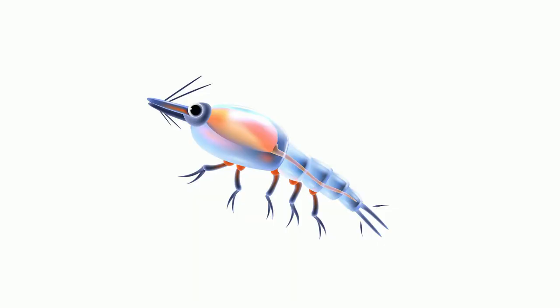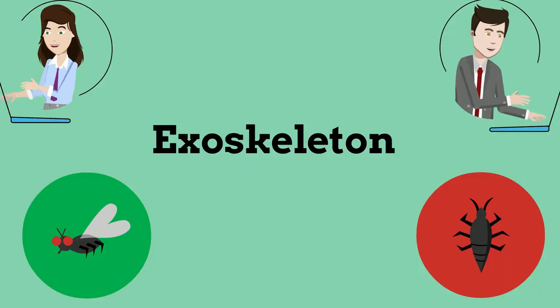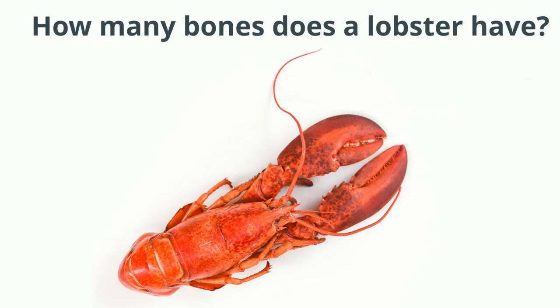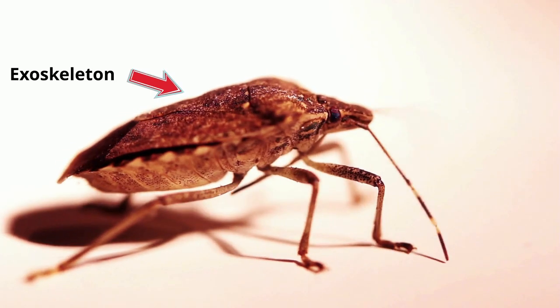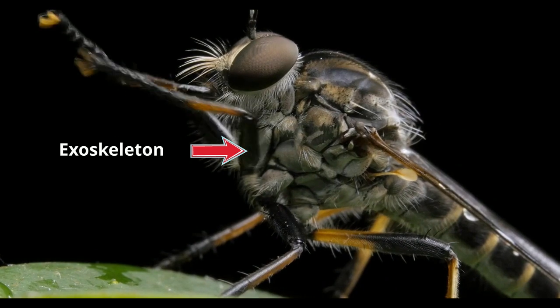First, crustaceans are arthropods, and all arthropods have several traits in common. Let's take a look at these. The first trait is an exoskeleton. Remember the question from the beginning — the answer to how many bones does a lobster have is none. Arthropods do not protect their organs with a skeleton made of bones. Instead, they have a hard outer covering called an exoskeleton.